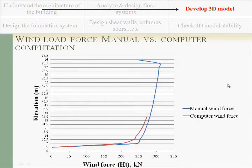This is a comparison between the manual and the computer wind analysis calculations. You can see this axis is the wind force per floor in kilonewtons and the elevation. As you can see the values are very near, and this is why we have been assured that our values and results are true.